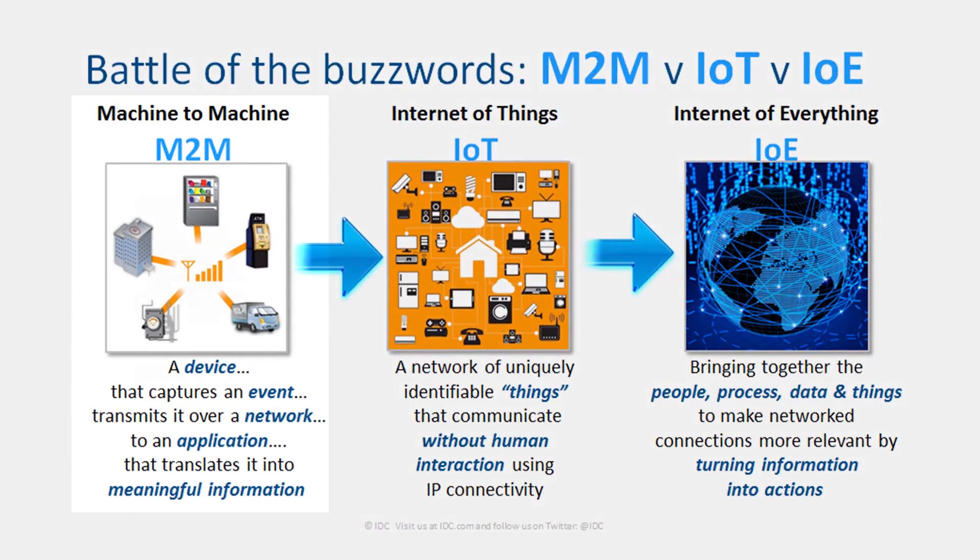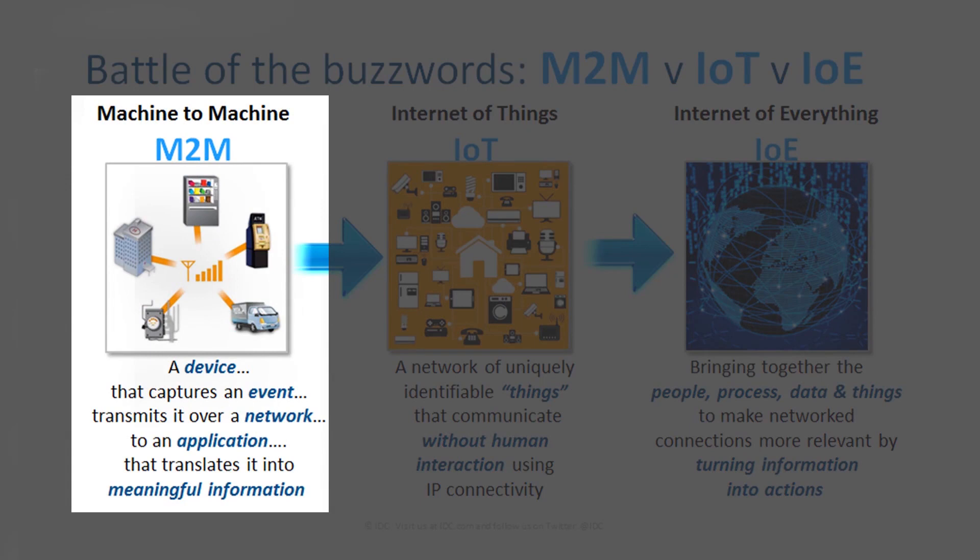To begin, it's important that we start by providing IDC's definition of the Internet of Things — and not just the Internet of Things, but how machine-to-machine technology will evolve into the Internet of Things, and then into the Internet of Everything. Machine-to-machine technologies have been around for nearly 30 years and involve a device that captures an event, transmits it over a network to an application, and translates it into meaningful information. What I'm going to do is give you a scenario so you understand how this can be implemented in the real world.